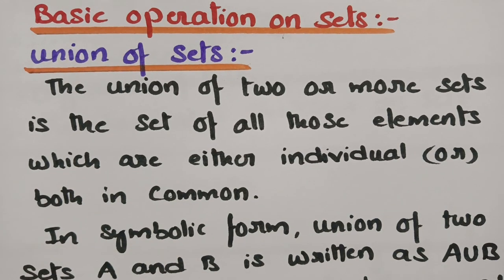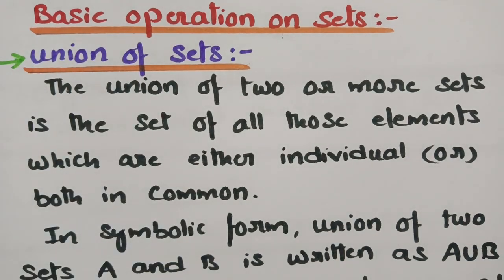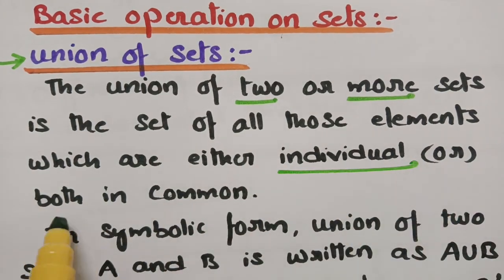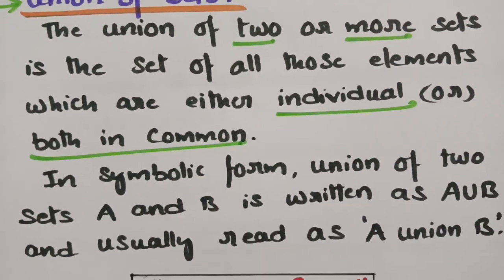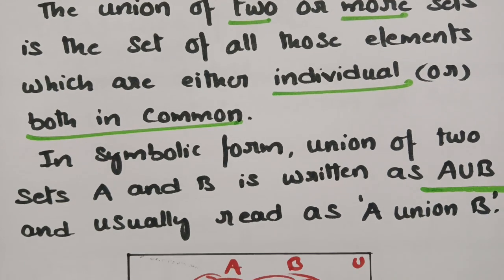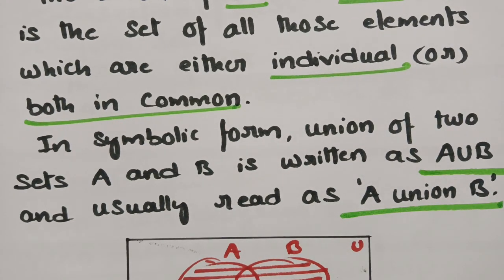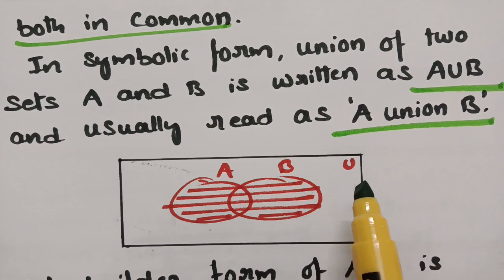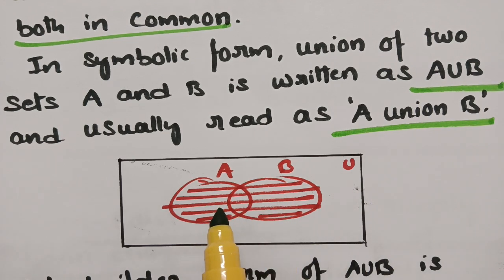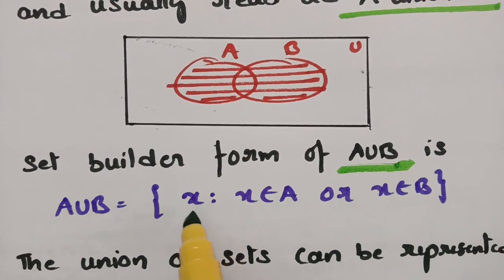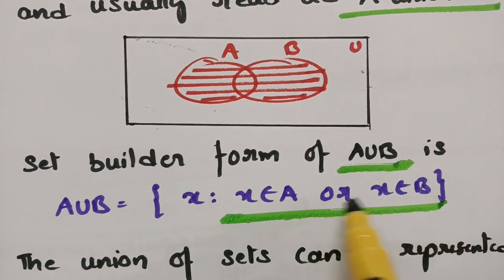The first one is union of sets. The union of two or more sets is the set of all elements which belong to either one individually or to both in common. In symbolic form, the union of A and B is written as A ∪ B and is read as 'A union B.' In set builder form, A ∪ B can be represented as: X such that X belongs to A or X belongs to B.